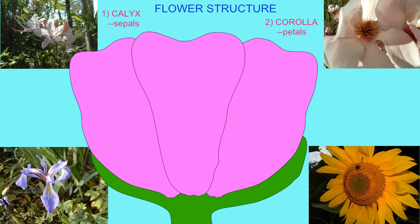Inside the calyx is a whorl known as the corolla, composed of modified leaves known as petals. These are often big and brightly colored to attract animal pollinators.